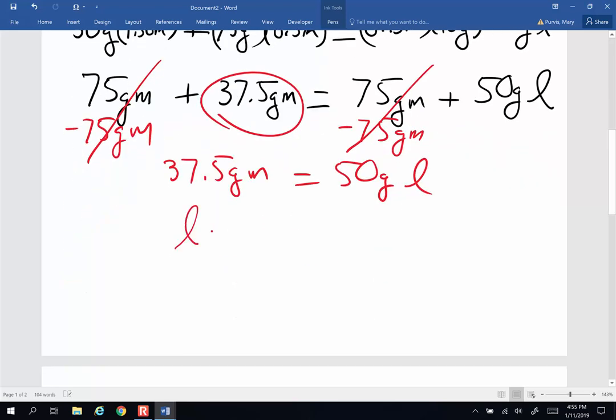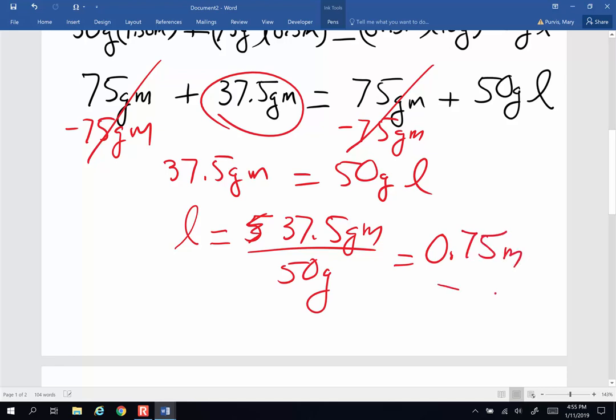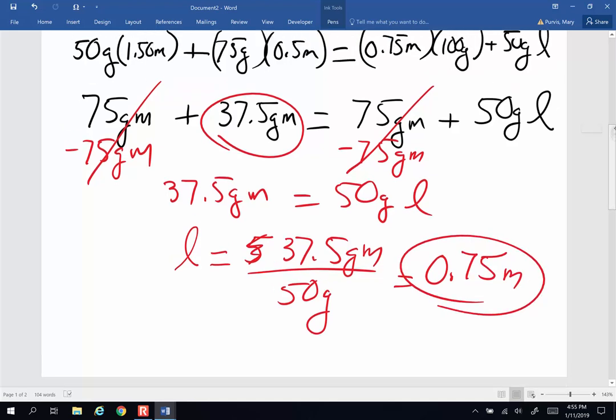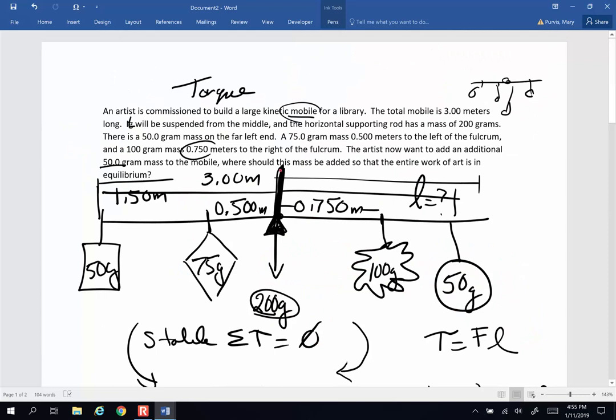So where am I actually going to place that unknown weight? Well, 37.5 gram meters divided by 50 grams, I get a lever arm of 0.75 meters. So where exactly should that 0.75 meters be? I'm measuring it from this pivot. It's going to be 0.75. Actually, I'm going to put my other 50 gram weight right directly below that 100, and it's going to be placed right there.